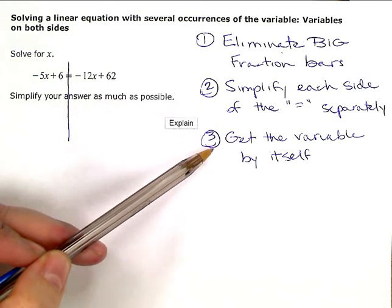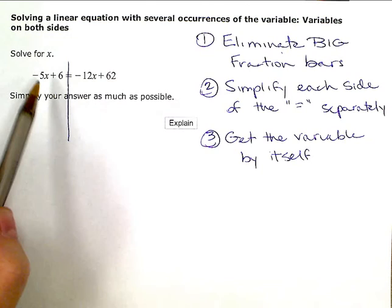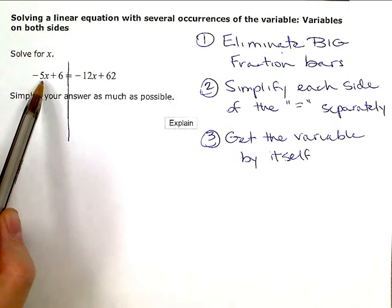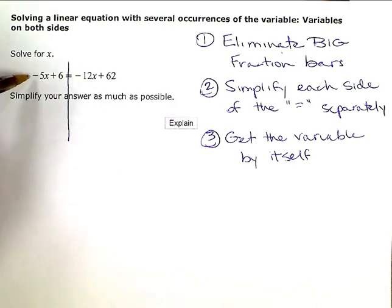Get the variable by itself. So since I have x's on both sides of my equation, I need to zero out one of these terms or eliminate one of these terms. It doesn't really matter which one, I could pick either. I like to just keep my x's on the left side, so I'm going to zero out this one.